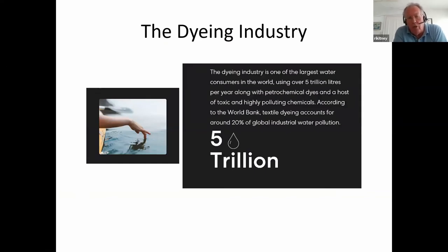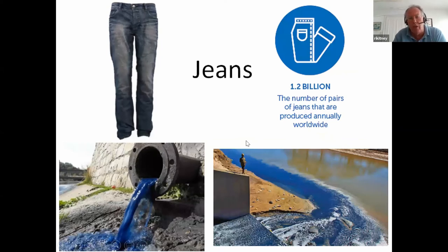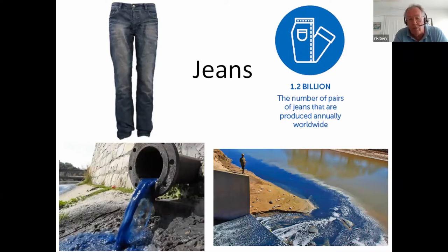The second area is the dyeing industry. The dyeing industry is one of the largest water consumers in the world, using over 5 trillion litres per year, along with petrochemical dyes and a host of other toxic and polluting chemicals. For example, 1.2 billion pairs of jeans are produced each year, and the toxic dyes go into the water supply in various countries — for example, China. This is a real problem in terms of pollution.